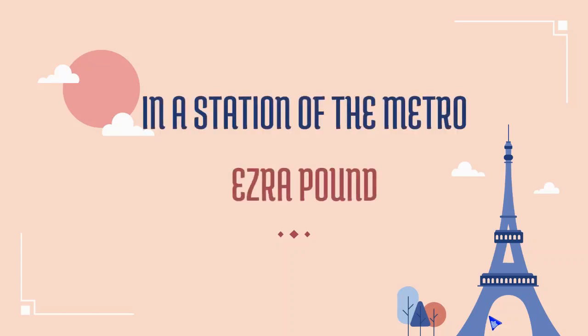Today in English Literature with Susan, we look at Ezra Pound's poem 'In a Station of the Metro.' This poem is an example of both an imagist poem and a haiku. In this video, I will explain imagism, haiku, and how this poem represents both of these literary systems and devices.